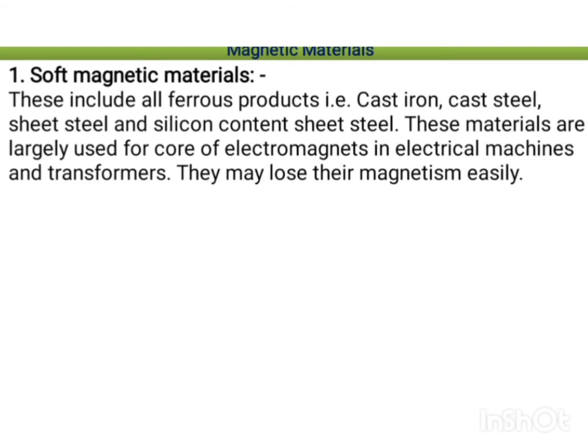Soft magnetic materials include ferrous products — ferrous means iron — such as cast iron, cast steel, sheet steel, and silicon-content sheet steel. These materials are largely used for the cores of electromagnets, electrical machines, and transformers. They may lose their magnetism very easily — the moment the magnetic field is stopped or reduced to zero, they lose their magnetism.